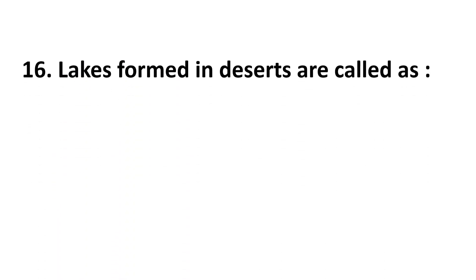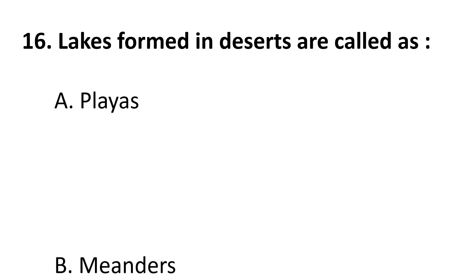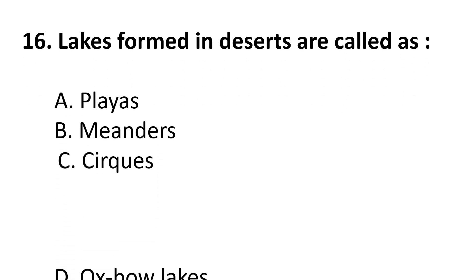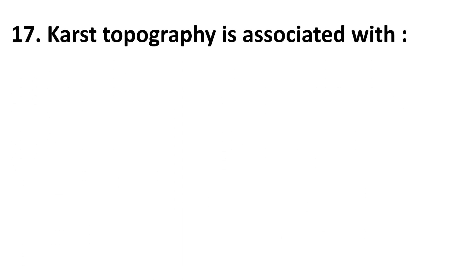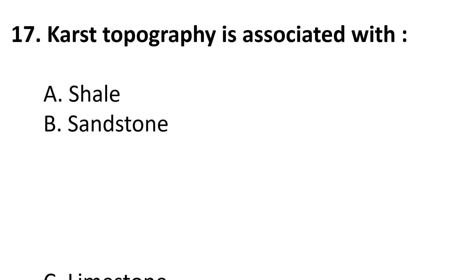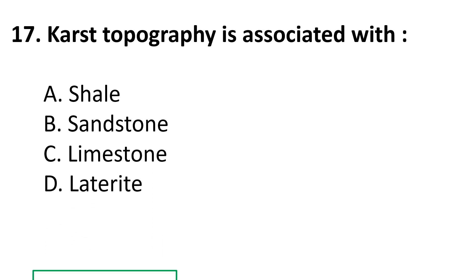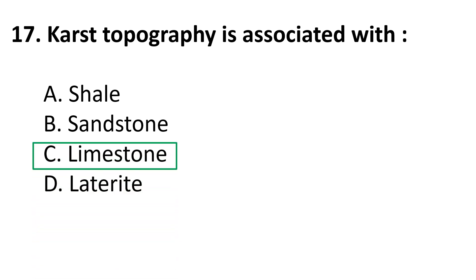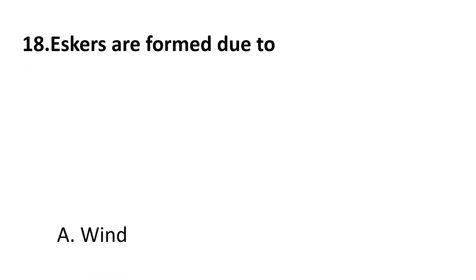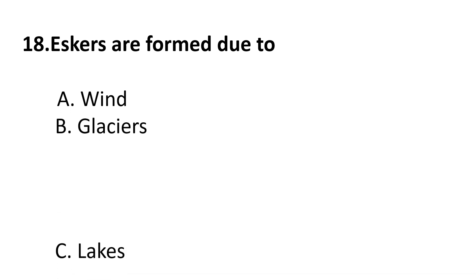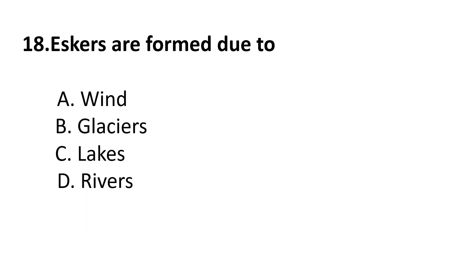Question 16: Lakes formed in deserts are called — choices are: A) Playas, B) Meanders, C) Cirques, D) Oxbow lakes. The correct answer is A) Playas. Question 17: Karst topography is associated with — choices are: A) Shale, B) Sandstone, C) Limestone, D) Laterite. The correct answer is C) Limestone. Question 18: Eskers are formed due to — choices are: A) Wind, B) Glaciers, C) Lakes, D) Rivers. The correct answer is B) Glaciers.